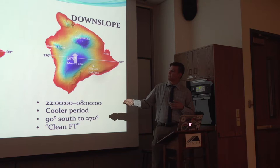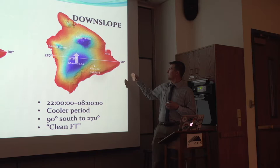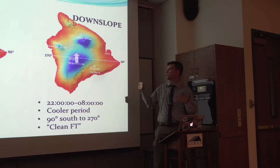The downslope is when, during the cooler parts of the day, you have winds blowing down past the observatory and are more indicative of free troposphere air.